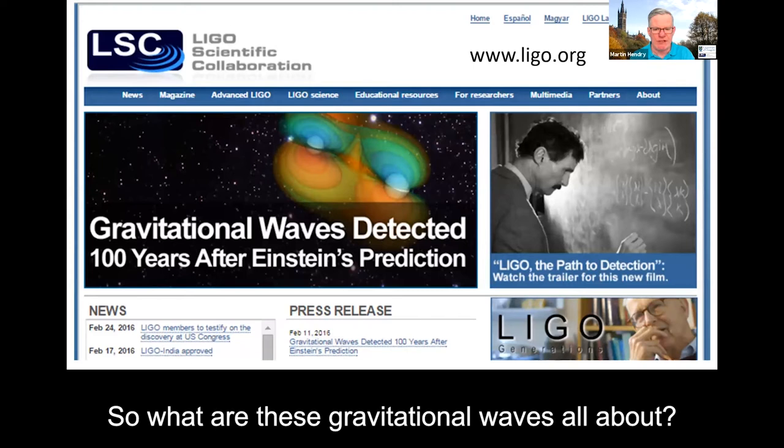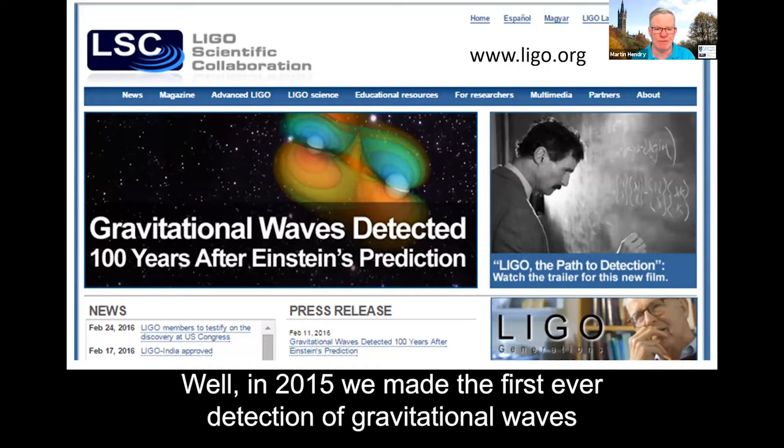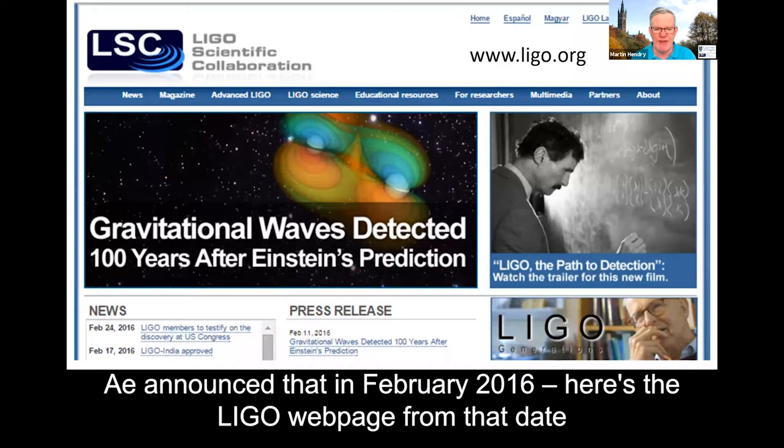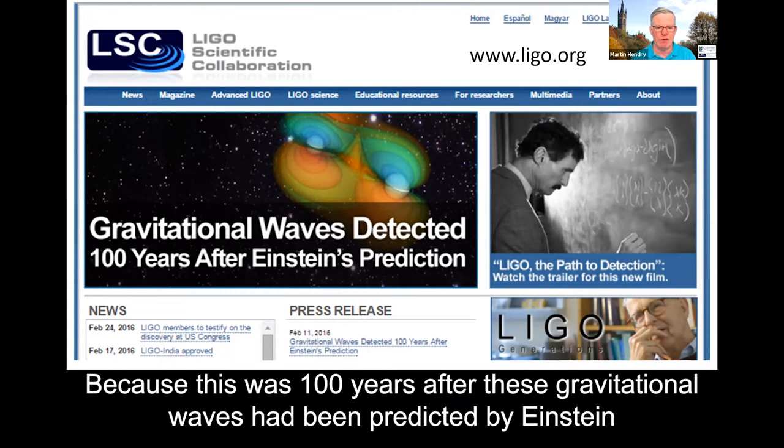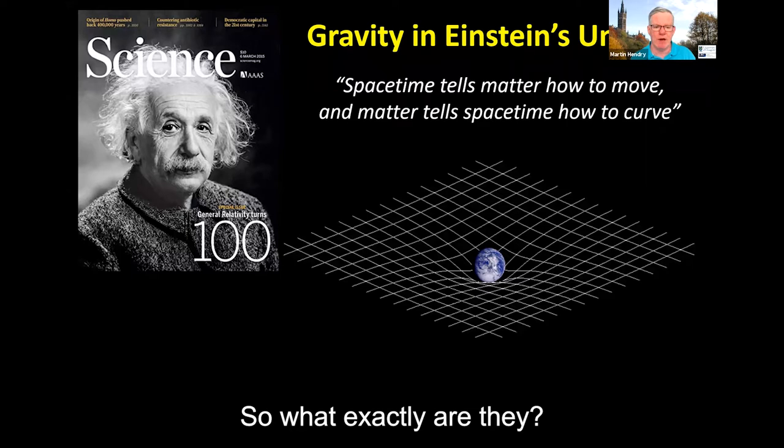So what are these gravitational waves all about? Well, in 2015 we made the first ever detection of gravitational waves. We announced that in February 2016. Here's the LIGO webpage from that date. And this was a big deal. It was publicized on more than 900 newspaper front pages around the world, because this was 100 years after these gravitational waves had been predicted by Einstein as a core prediction of his general theory of relativity.